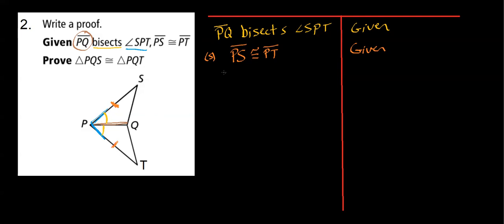Now I need to write that in my proof here. So I'm just going to say angle SPQ is congruent to angle TPQ. And my reason here, how did I know that? Well, I'm pulling directly from what it means to bisect an angle. So this is going to be my definition of angle bisector.